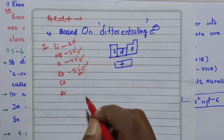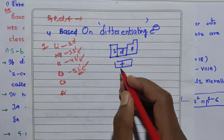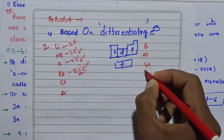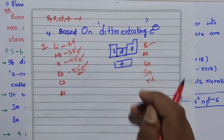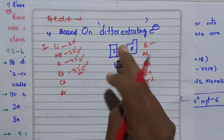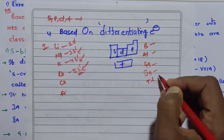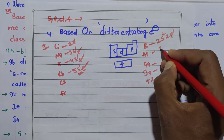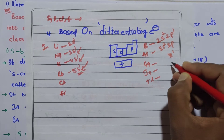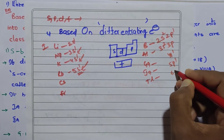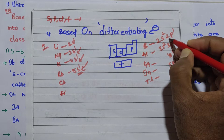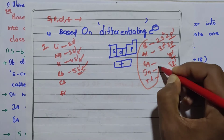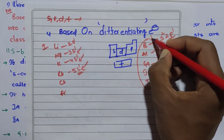If you see another group — boron, aluminium, gallium, indium, thallium — I will tell you about the differentiating electron. For boron, the last valency shell is 2s2, 2p1. For aluminium it is 3s2, 3p1. Similarly 4p1, 5p1, 6p1. So the last electron is in the p orbital. This group is the 13th group — that is p block.